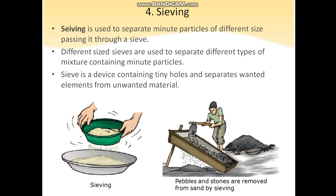Hello everyone. In our previous class we talked about different methods of separating substances. Now we will talk about another method of separating substances which is known as sieving. Sieving is a process used to separate minute particles of different sizes by passing them through a sieve.